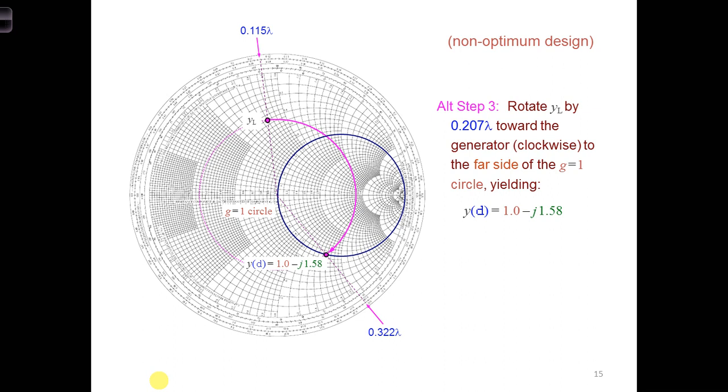For example, as shown here, what if we had kept rotating around the Smith chart to the second intersection? So before we stopped here, now we're going to stop at the second intersection with the G equal 1 circle. What would be different if we had chosen this location instead of the top location?